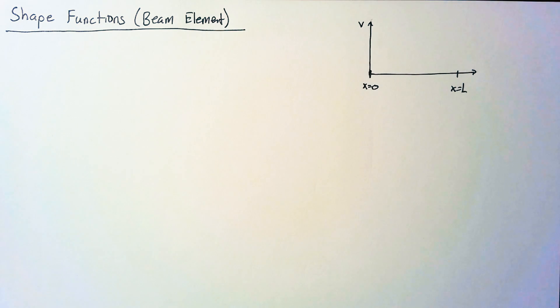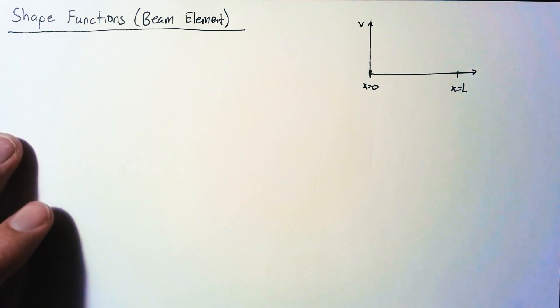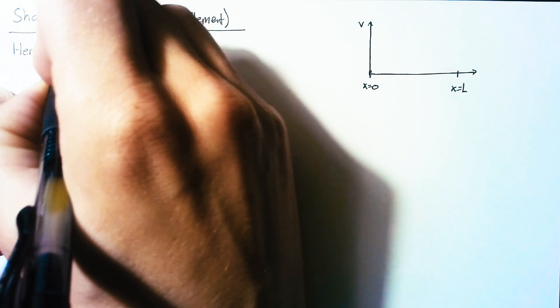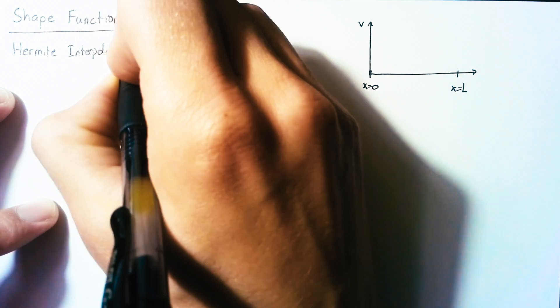What this means for us is that the Lagrange polynomials that we used for the bar or truss no longer work. We have to go with another class of polynomials, and the class that works is known as the Hermite cubic.